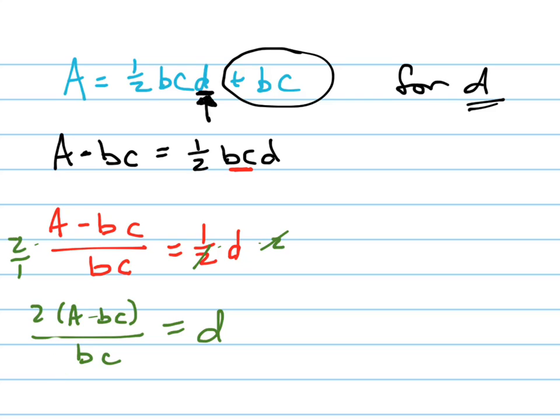You could simplify this more because you could distribute this two in. So it could also be written like this. And then you could even simplify that more by taking this BC and distributing it into both terms there, which would give you 2A over BC minus, now those BCs would cancel, it would just be minus two.